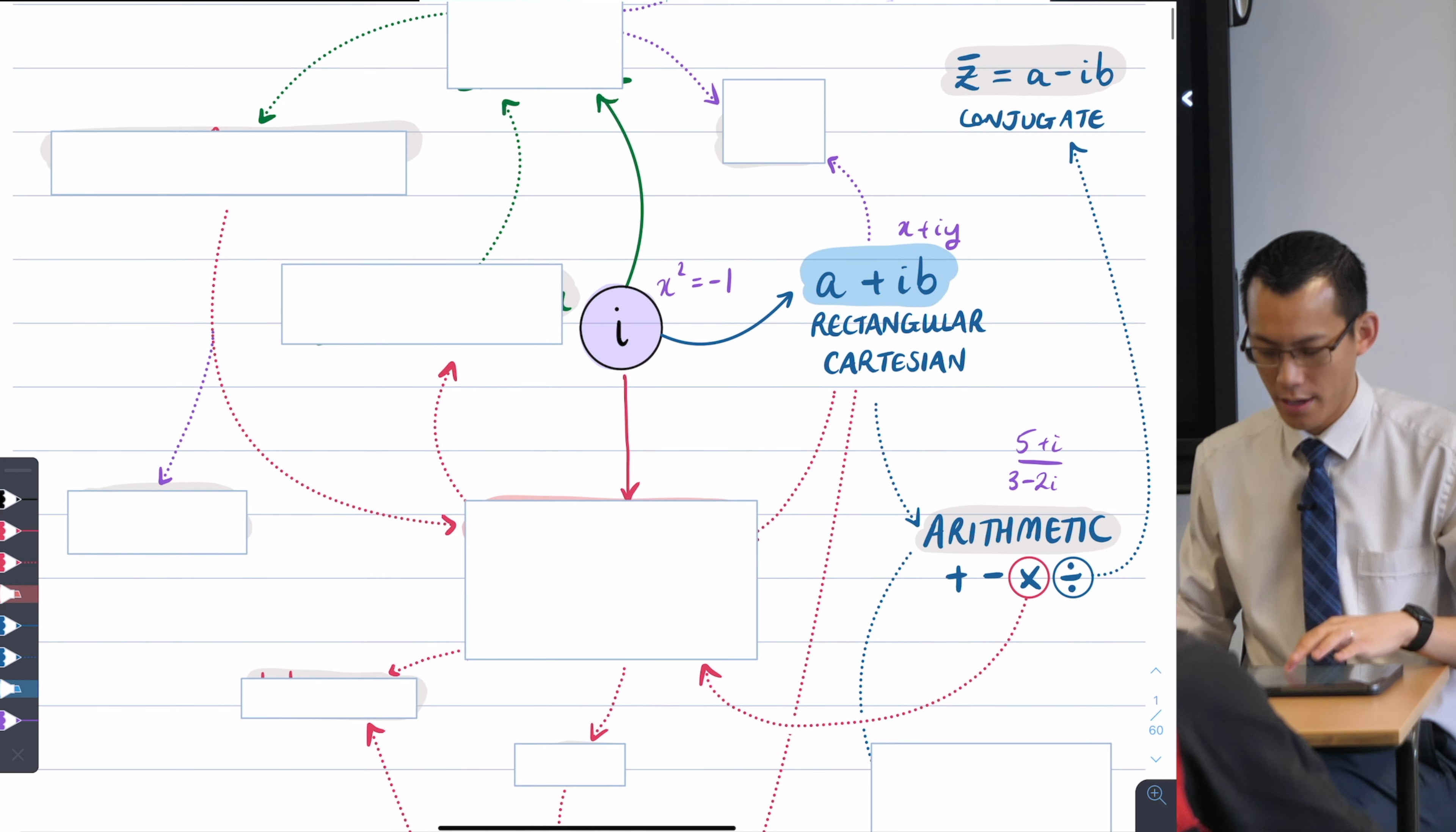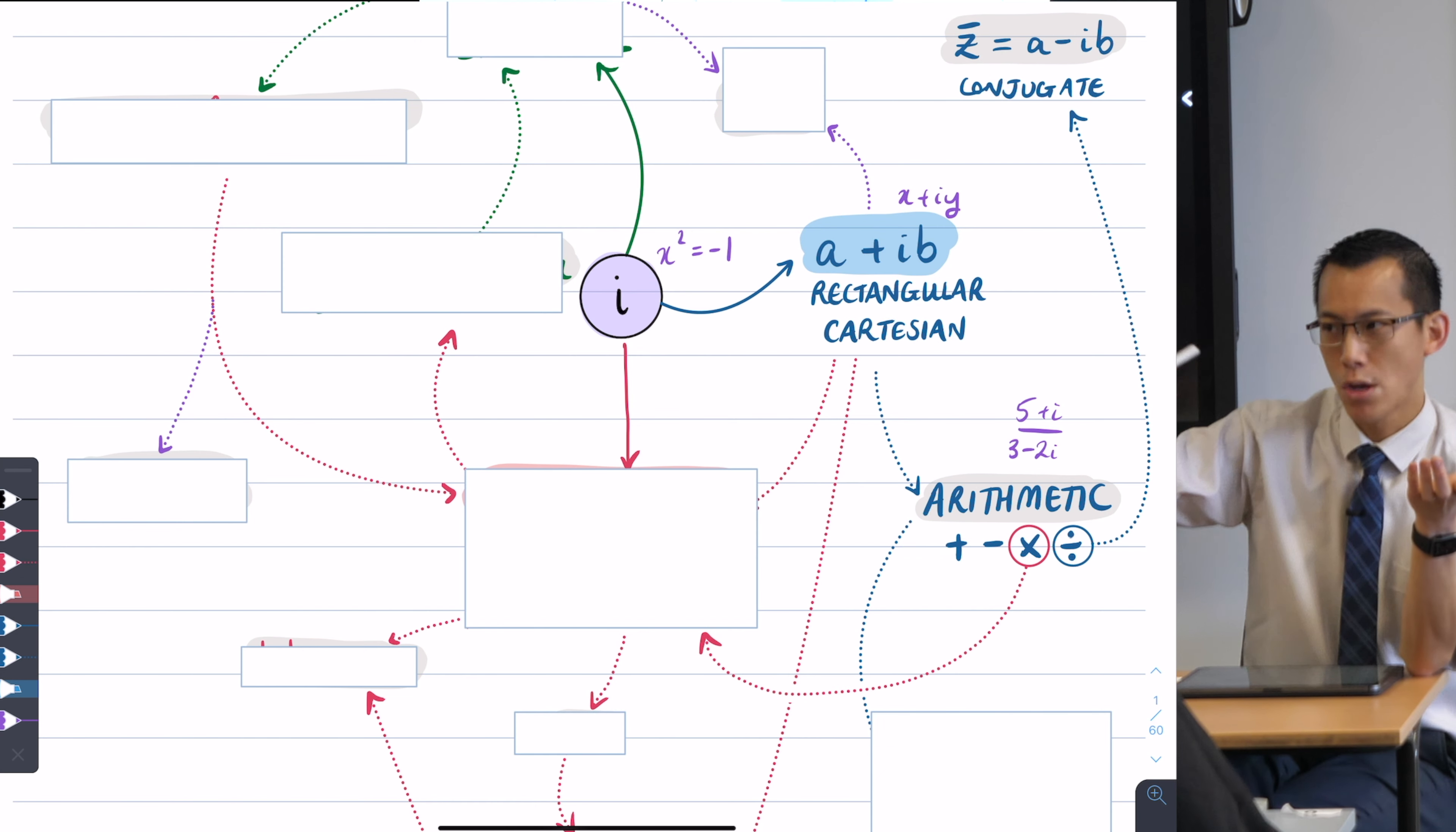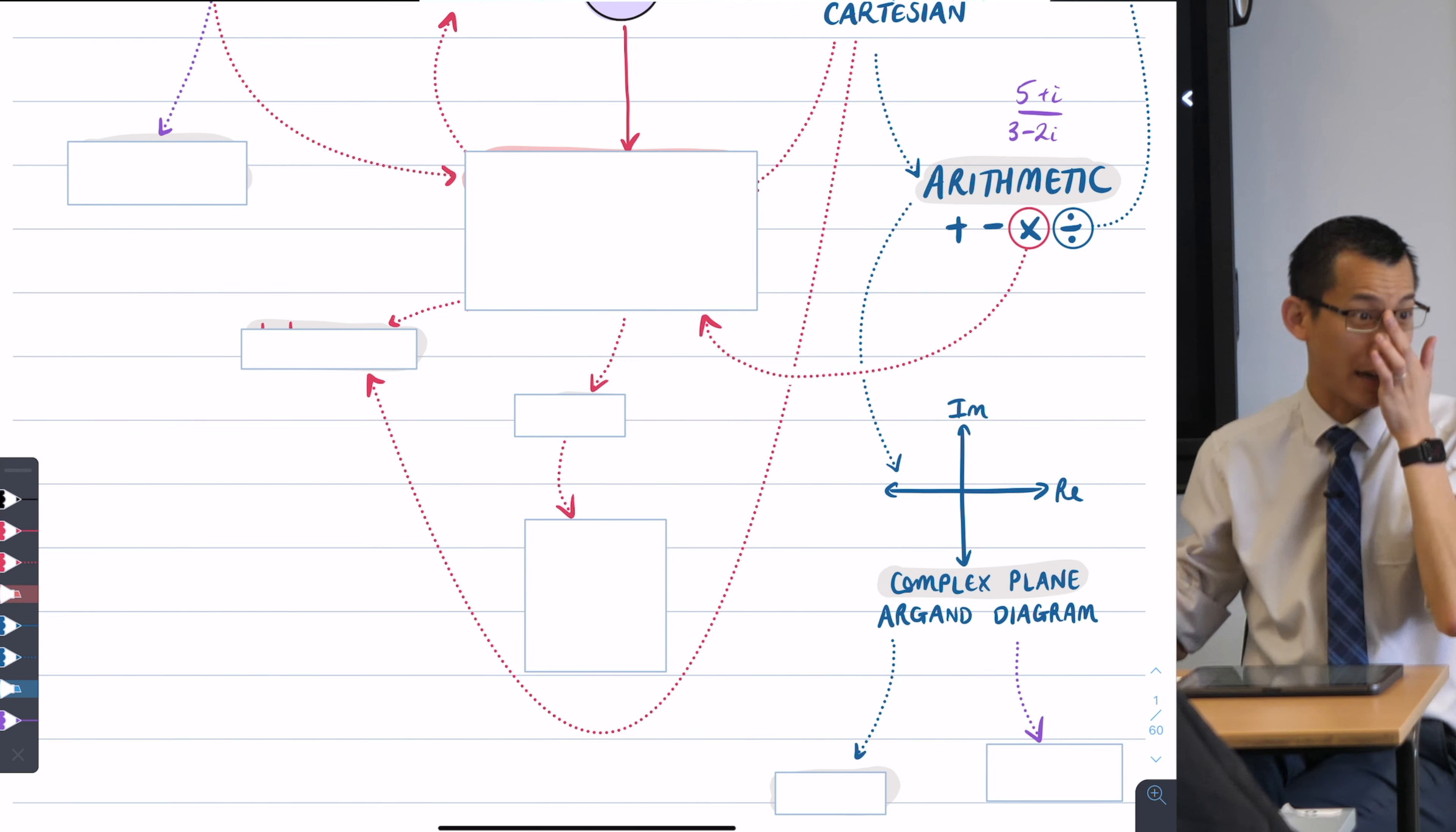But then we started to realize, particularly when you add, subtract, and then we'll get to multiplication shortly, you can actually start to visualize this better, right? If I gave you two complex numbers and I said add them together, I asked you what was the result and its relationship, apart from just number crunching, with what you started with. And we started to realize that if you plotted these onto a two-dimensional space, good morning gentlemen, which we called the complex plane, to be distinguished from the Cartesian plane. This is not a real number and then another real number, we have real numbers and then we've got imaginary numbers.